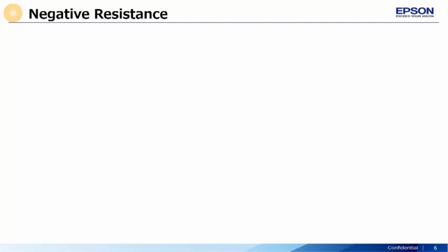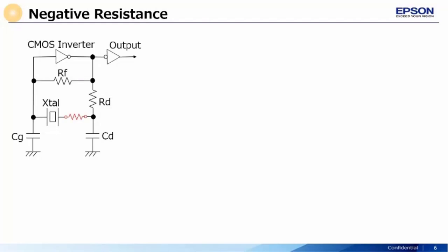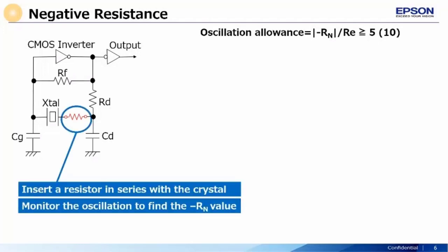Next up we have the negative resistance. The oscillator circuit must be designed to enhance the negative resistance for reliable performance. To calculate the negative resistance, start by adding a variable resistor in series with the crystal. Power up the oscillator and monitor the output on an oscilloscope.